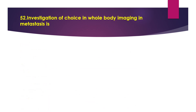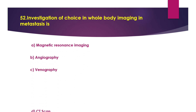Question 52: Investigation of choice in whole body imaging in metastasis. Option A: MRI. Option B: angiography. Option C: venography. Option D: CT scan. The answer is option D, CT scan. CT including low-dose CT is used to detect changes in bone structures due to metastasis of primary tumours. Specificity is 95% and sensitivity is 73%.